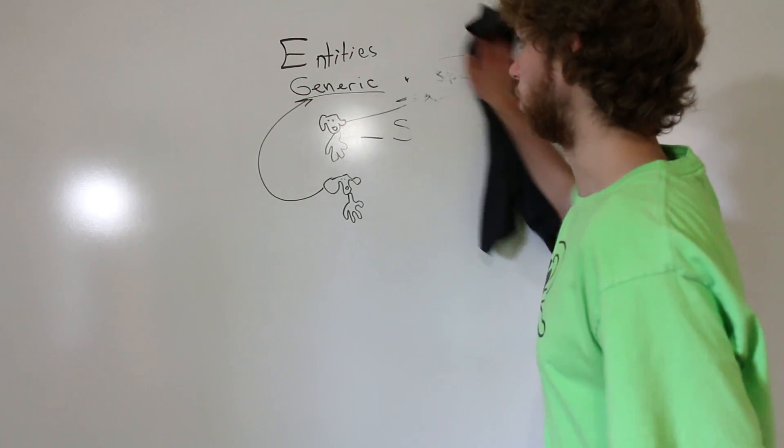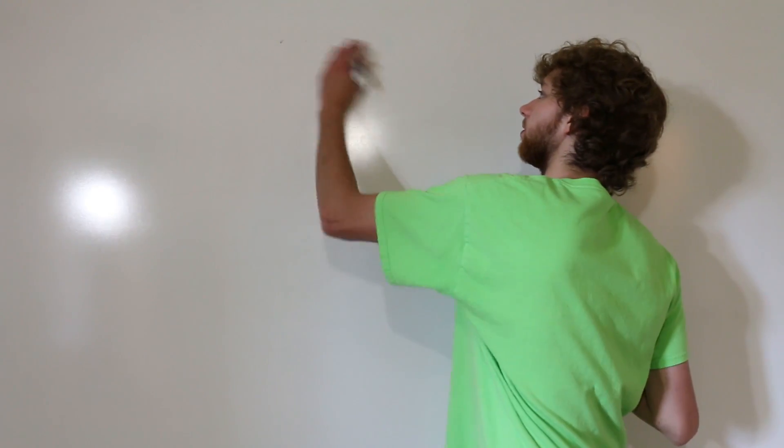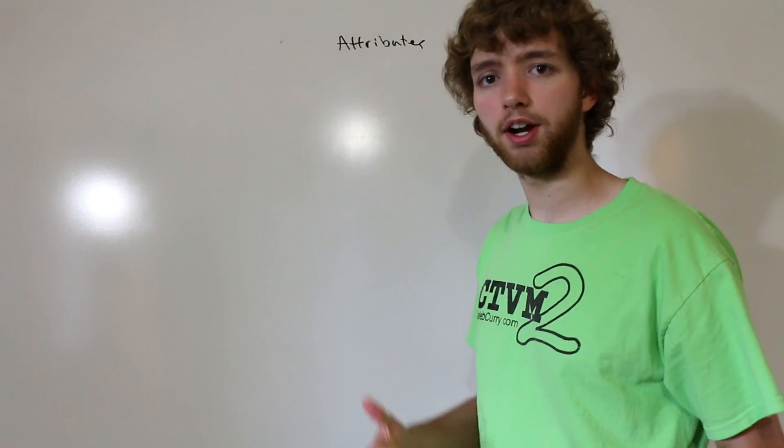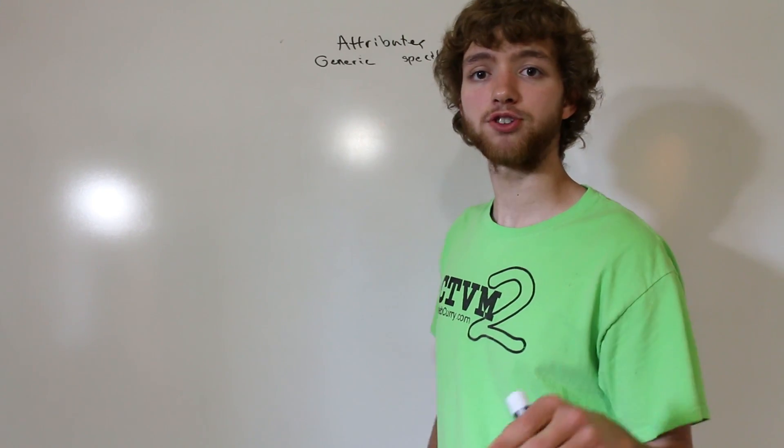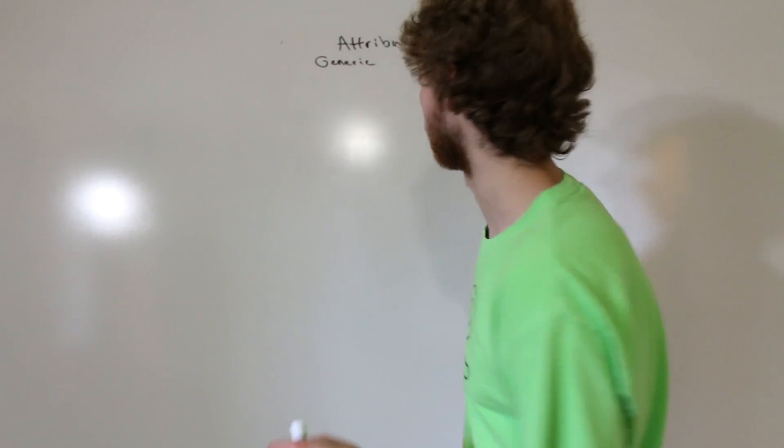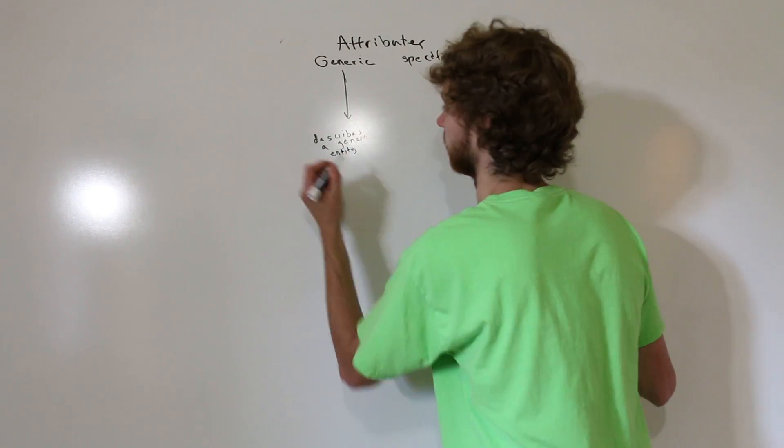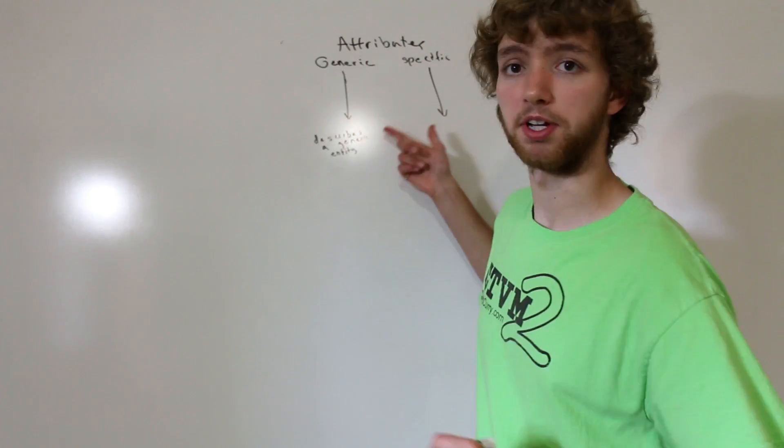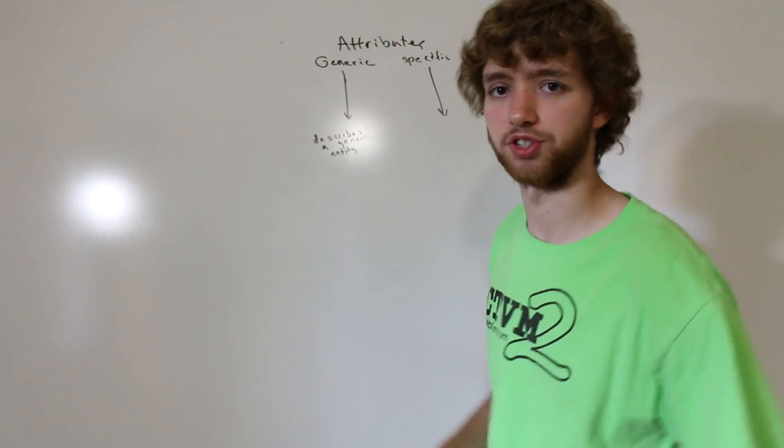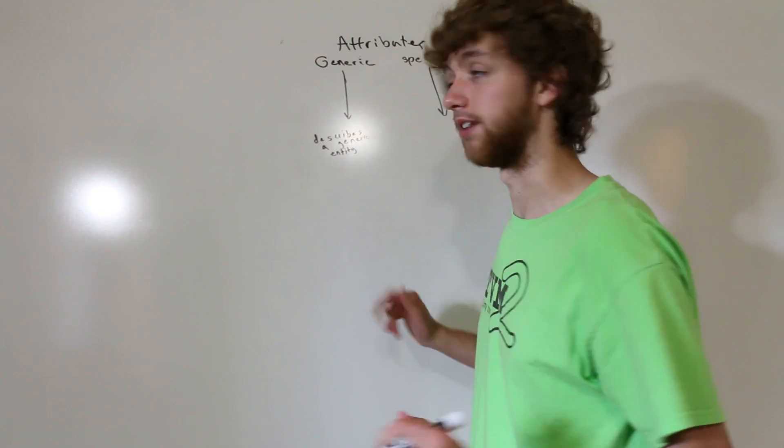Let's move on to attributes. There's also generic and specific attributes. What is an attribute? An attribute describes something. A generic attribute describes a generic entity such as dogs. A specific attribute describes a specific entity.